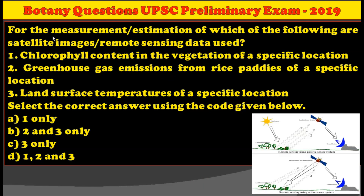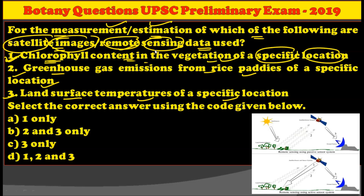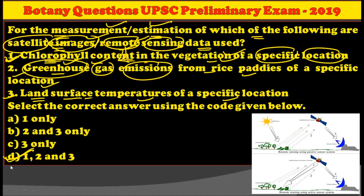The next question is about remote sensing: for the measurement and estimation of which of the following are satellite images or remote sensing data used? The options are: the chlorophyll content of the vegetation of a specific location; greenhouse gas emissions from rice paddies of a specific location; and land surface temperature of a specific location. All three statements are correct — remote sensing is used to estimate chlorophyll content, greenhouse gas emissions, and land surface temperature. Therefore, option number D, that is 1, 2, and 3, is the correct answer.